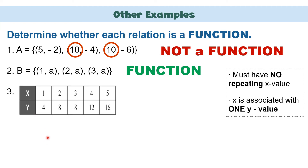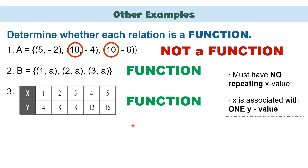For number 3, we have a table of values. The x values are 1, 2, 3, 4, and 5. The y values are 4, 8, 8, 12, and 16. You just have to look at the x values. As you can see, there is no repeating x value. Therefore, this is considered a function.